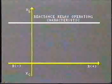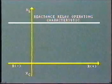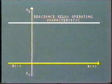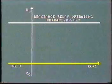A common method of getting around this problem is to install relays which measure reactance only. The operating characteristic is shown by this horizontal line. Reactance is measured on the vertical.